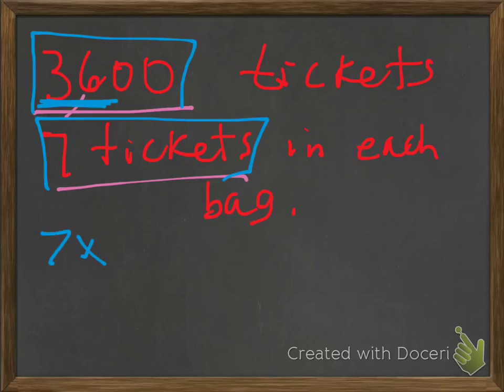7 times what gets us close to 36? Well, we do know that 7 times 5 gets us 35. So let's continue it.